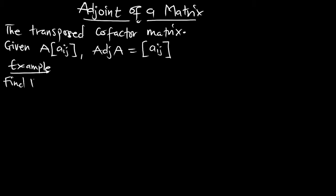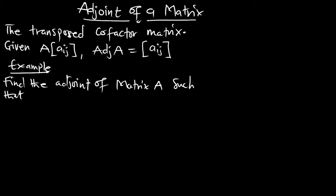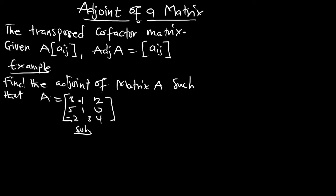Find the adjoint of matrix A, such that our matrix A is given as: 3, 1, 2; negative 1, 5, 1; 0, negative 2, 3; 4. This is our matrix A and we have to find the adjoint. For the solution, we must first find the cofactor matrix.